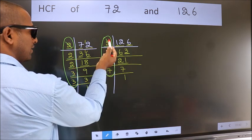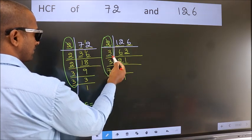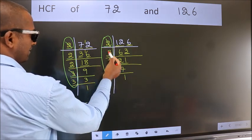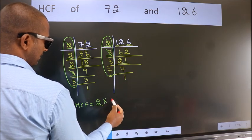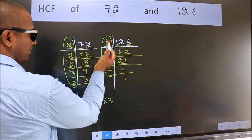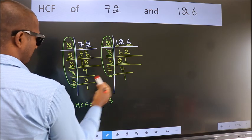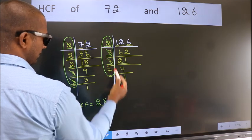Next number 3. Do we have 3 here? Yes. So, cut 3 right here. Next number 3. Do we have 3 here? Yes. So, cut 3 right here.